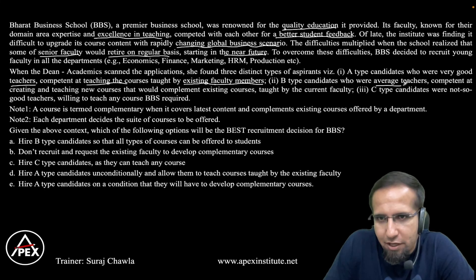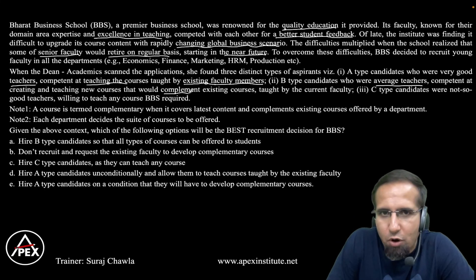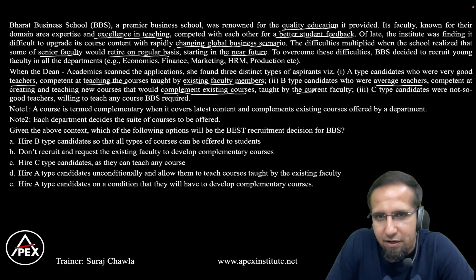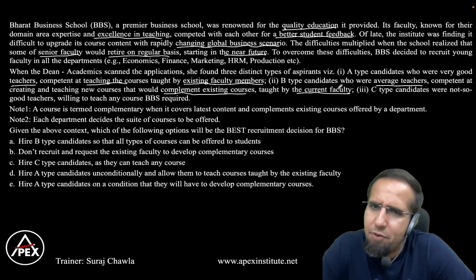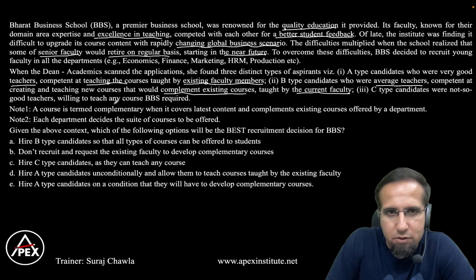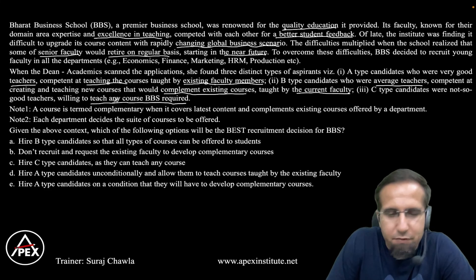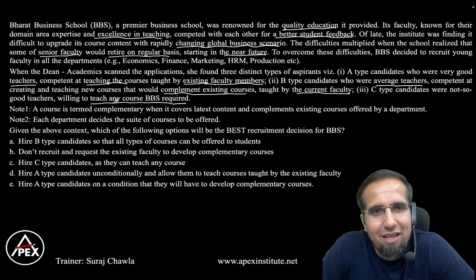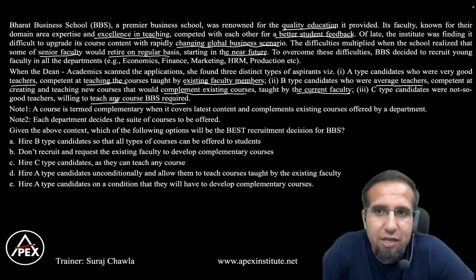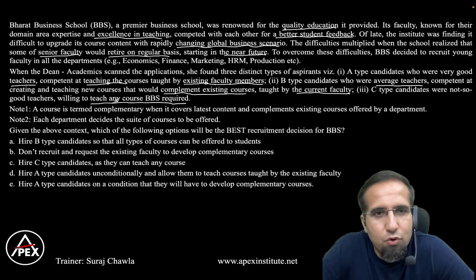Type B candidates were average teachers but competent in creating new complementary courses that would complement existing courses taught by current faculty. These are the people who can make new courses but are average teachers — this is where the institute has to strike a balance. Type C candidates were not-so-good teachers, willing to teach any course BBS required. Type C is not preferred because they can't create courses and are not good teachers, whereas teaching quality is a key strength.